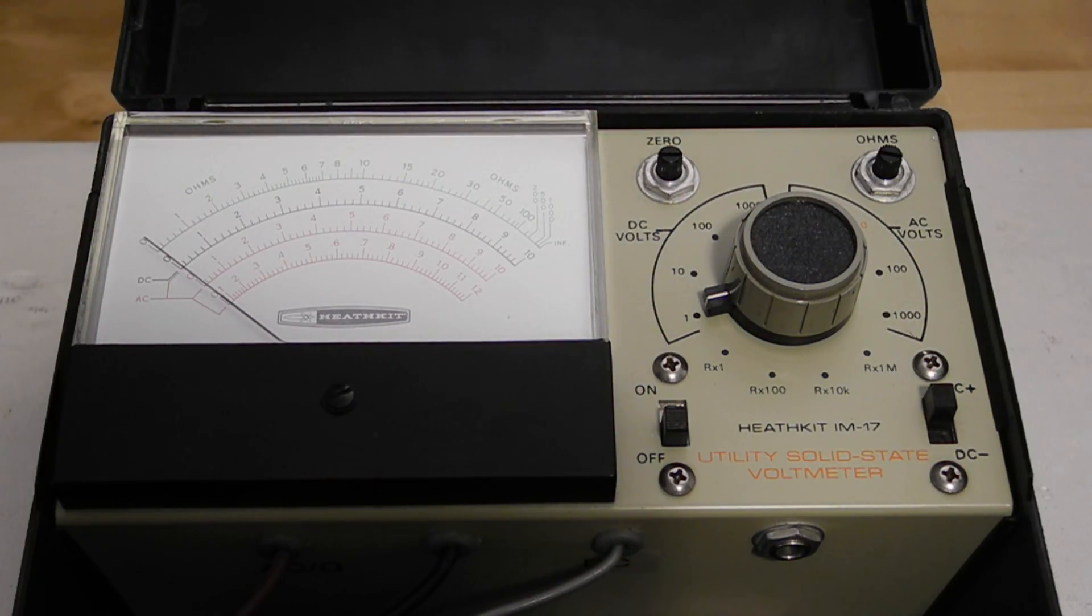The ohms control is adjusted so the meter reads full scale on the resistance ranges when the leads are open. This also needs adjustment periodically as the battery voltage changes.